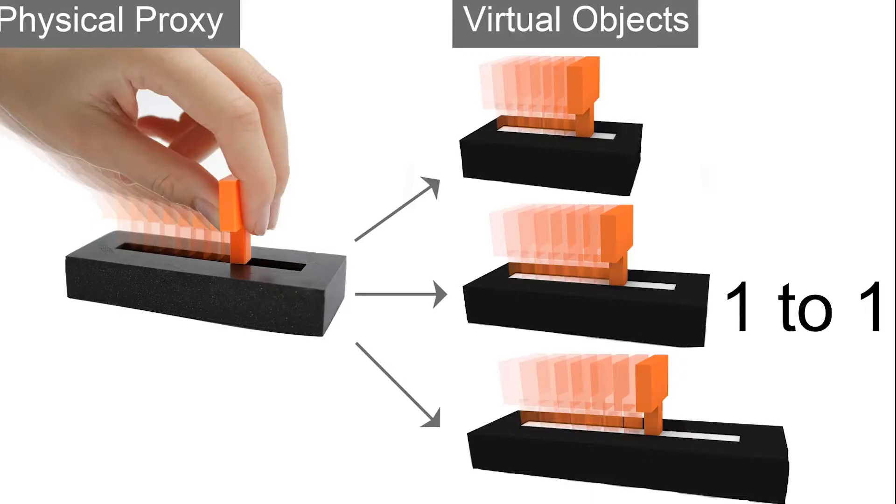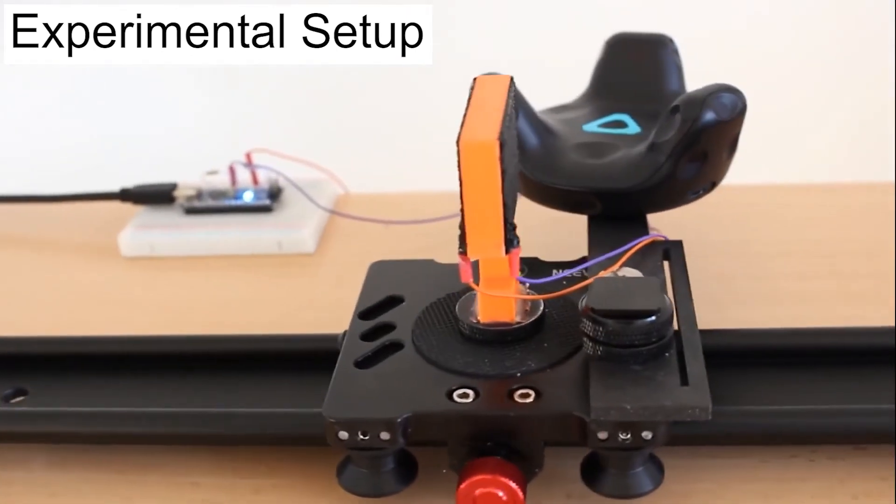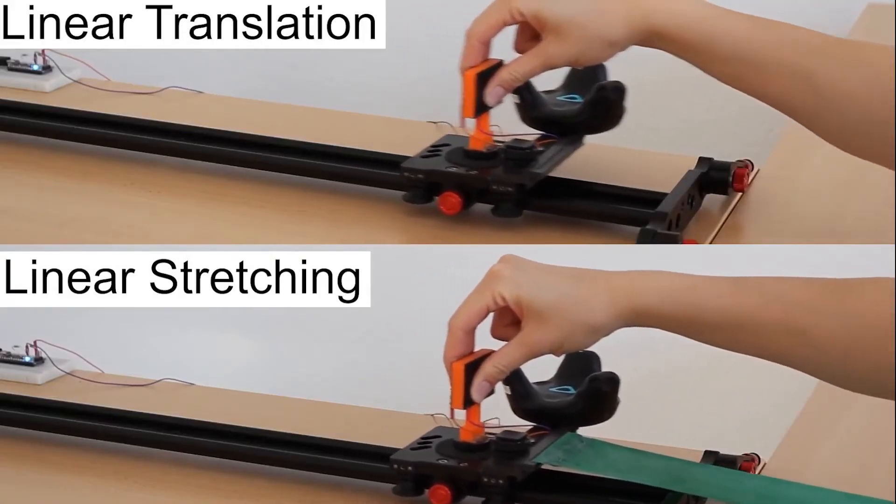We ran a study with 24 participants investigating how much discrepancy between the physical proxy and virtual object can be used while remaining unnoticed. In our study we compared two manipulation techniques, linear translation and stretching, at travel distances of 7 and 14 centimeters.